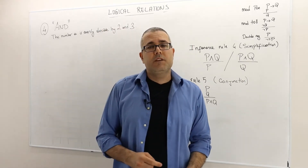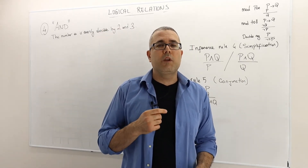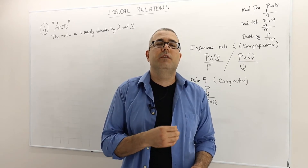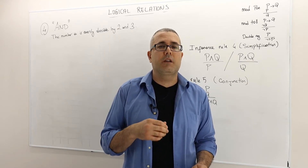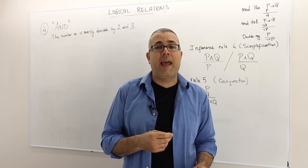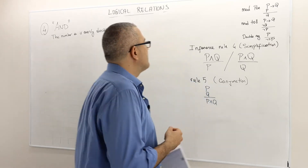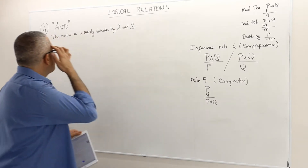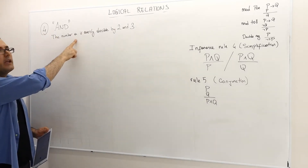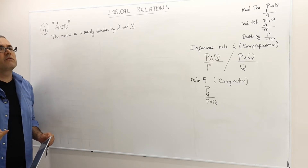This is section 4 where we introduce a new language into our logic language, which is the conjunction AND. Think about a sentence like: the number A is evenly divisible by 2 and 3.